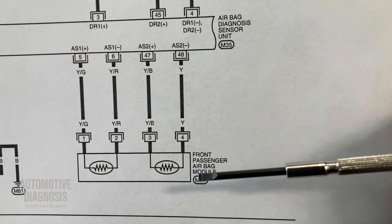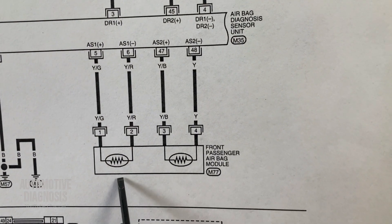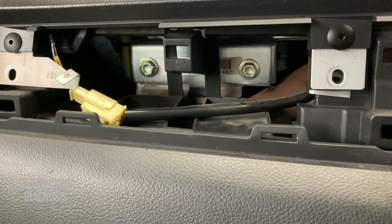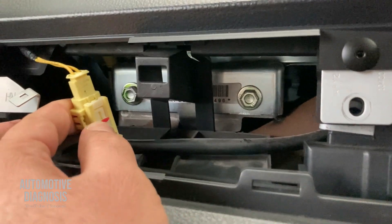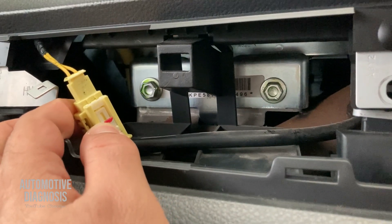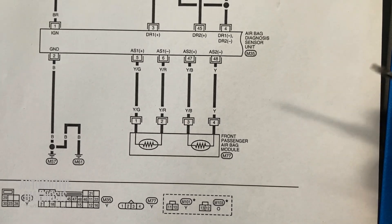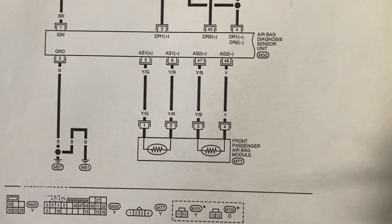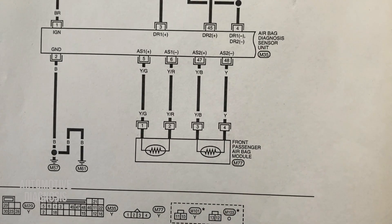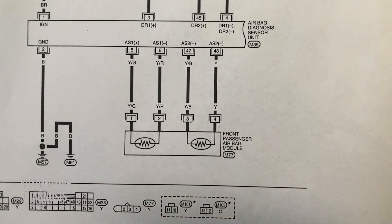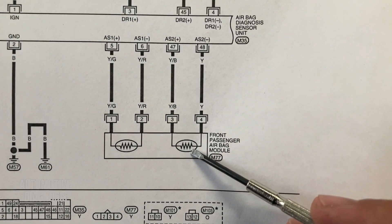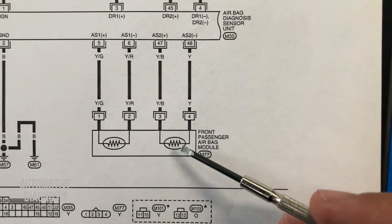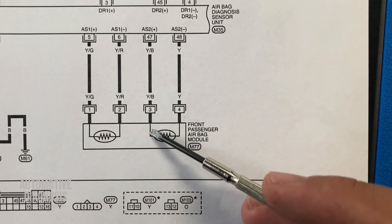Now, the wiring diagram shows this airbag has two stages, but here on the car I have removed part of the dash to reach the airbag connector, and it actually has only two wires — meaning only one stage. So whatever your wiring diagram tells you, always verify it against the actual car, as there can be differences.